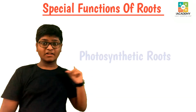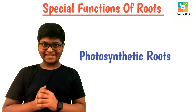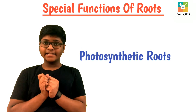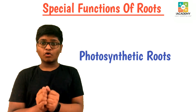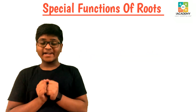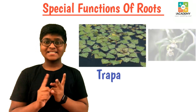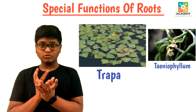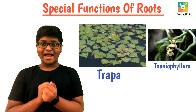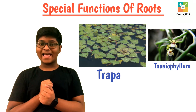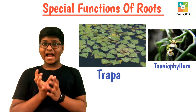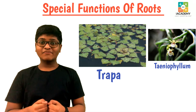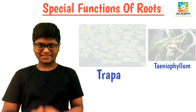Let us learn about photosynthetic roots. These roots have the capability to prepare their own food. For example, Trapa and Taeniophyllum have green roots. These roots are green in color and they absorb carbon dioxide and sunlight and prepare food by themselves. So they are known as photosynthetic roots.